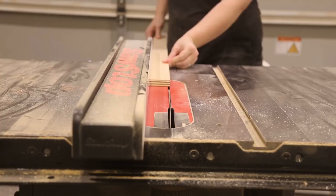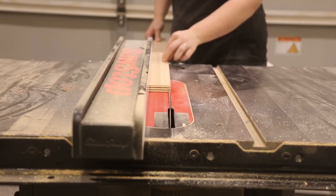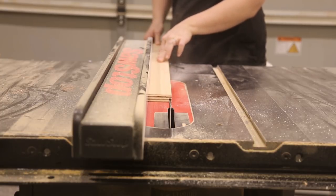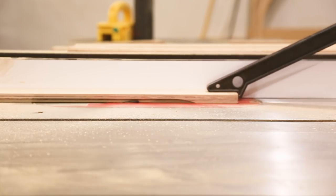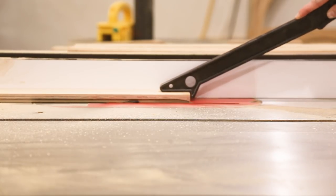The next step was to cut a rabbit into the strips and I used the table saw for this. I set my fence and lowered my blade and then made the first pass. I could then push the fence over a little and make a second pass to finish the rabbit.